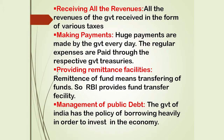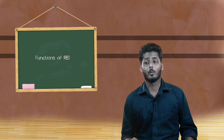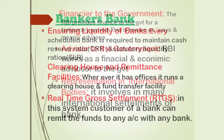Management of public debt: the Government of India has the policy of borrowing heavily in order to invest in the economy. Financial to the government: RBI provides finance to the government for a temporary period, known as Ways and Means Advances. The next point is advisor to the government — RBI works as a financial and economic advisor. The next point is representation in international bodies — it is involved in many international banking institutions.